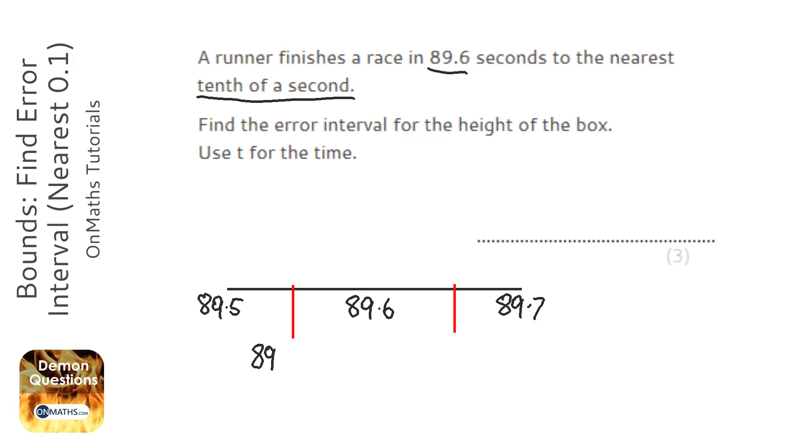So that's going to be 89.55 and 89.65. Now it says it wants it as an error interval.